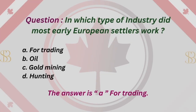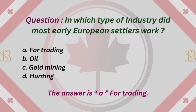Question: In which type of industry did most early European settlers work? A. Fur trading. B. Oil. C. Gold mining. D. Hunting. The answer is A. Fur trading.